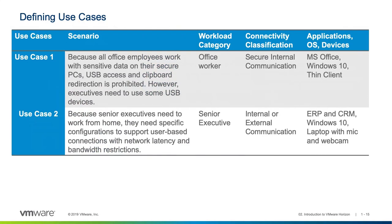With use case two, we have senior executives that work from home. That comes with some other challenges — they have to have specific configurations that support a remote connection, along with taking into consideration the potential for network latency and bandwidth reductions. What they may have in one area may be different in other areas. So we put them in a workload category of senior executive with a connectivity classification of internal or external, and then consider what applications and devices they may need.